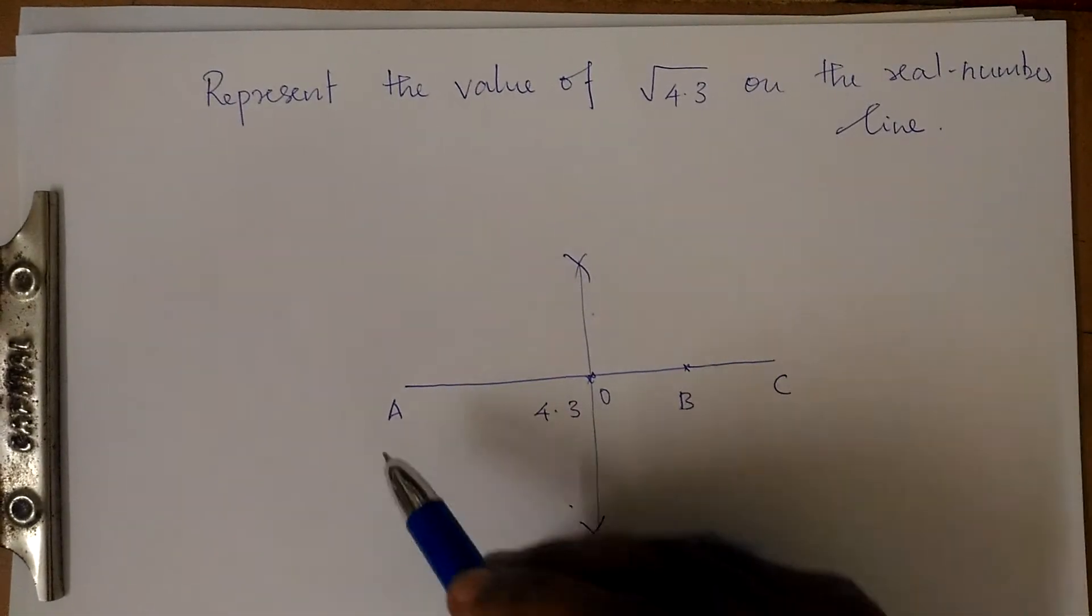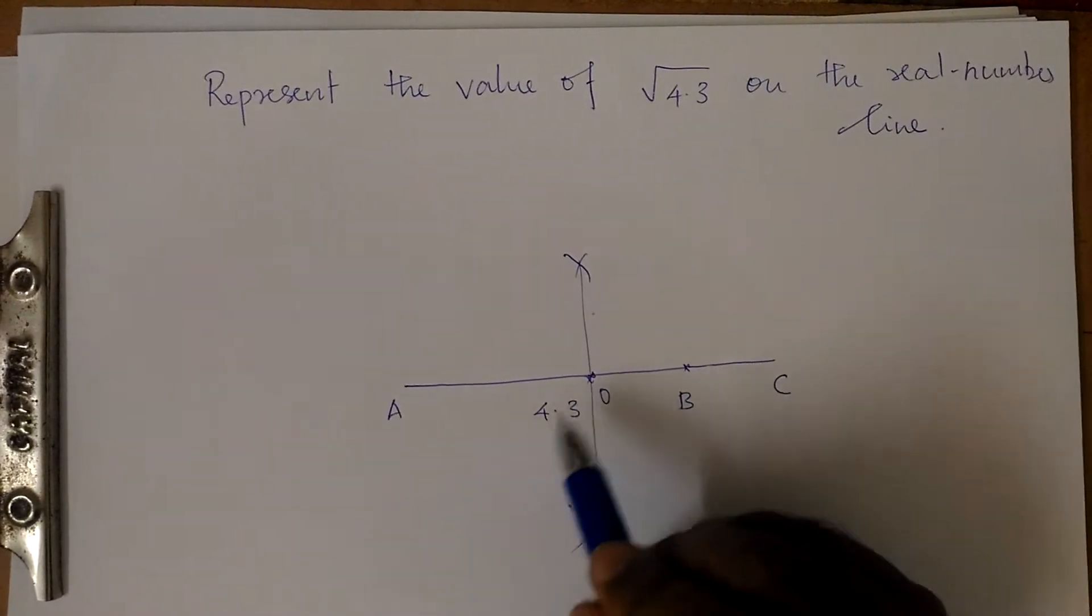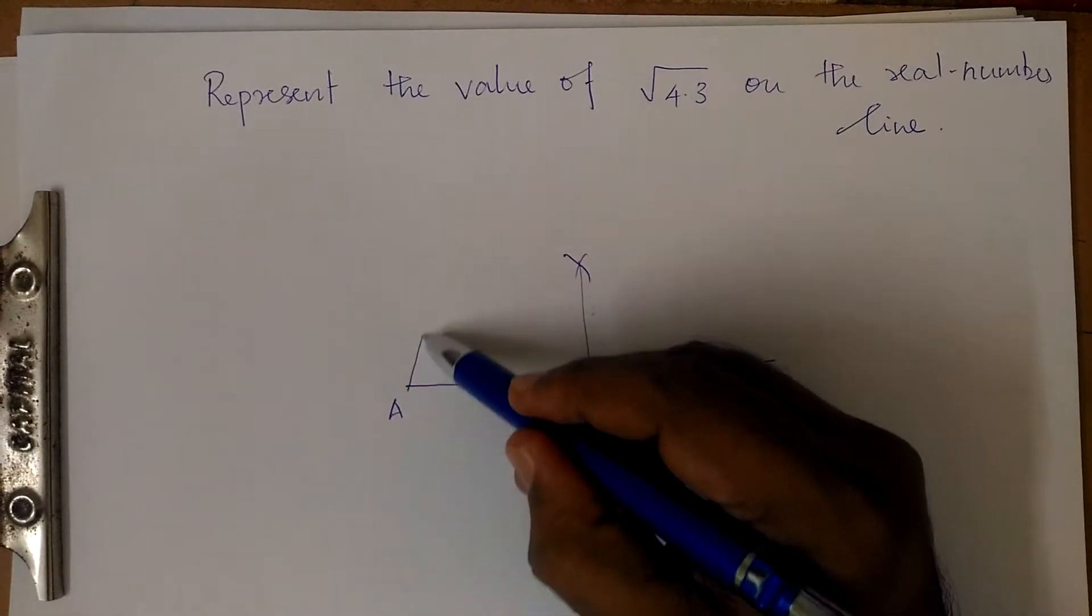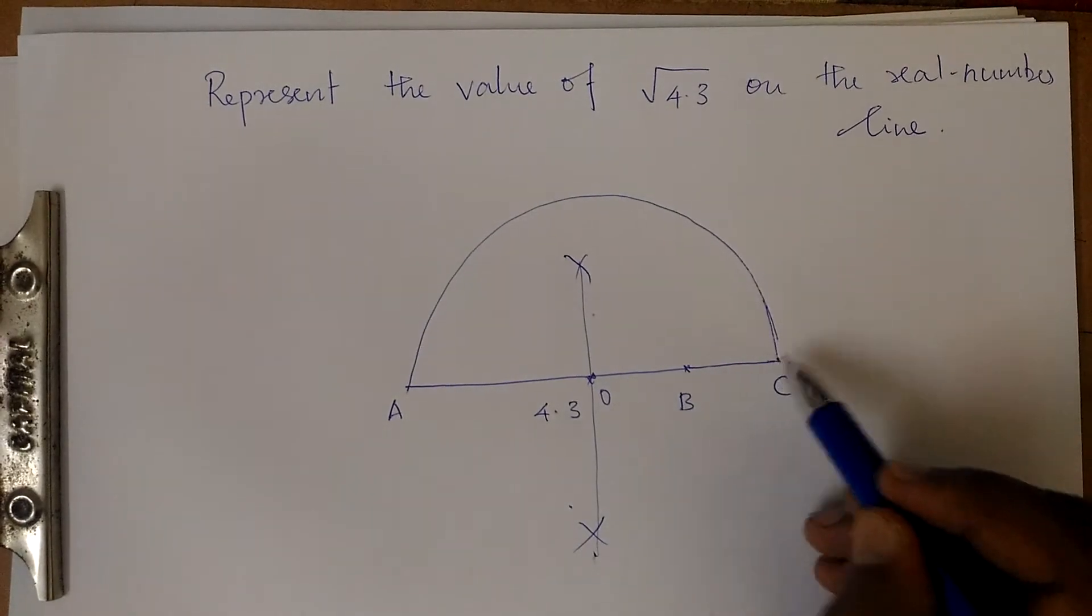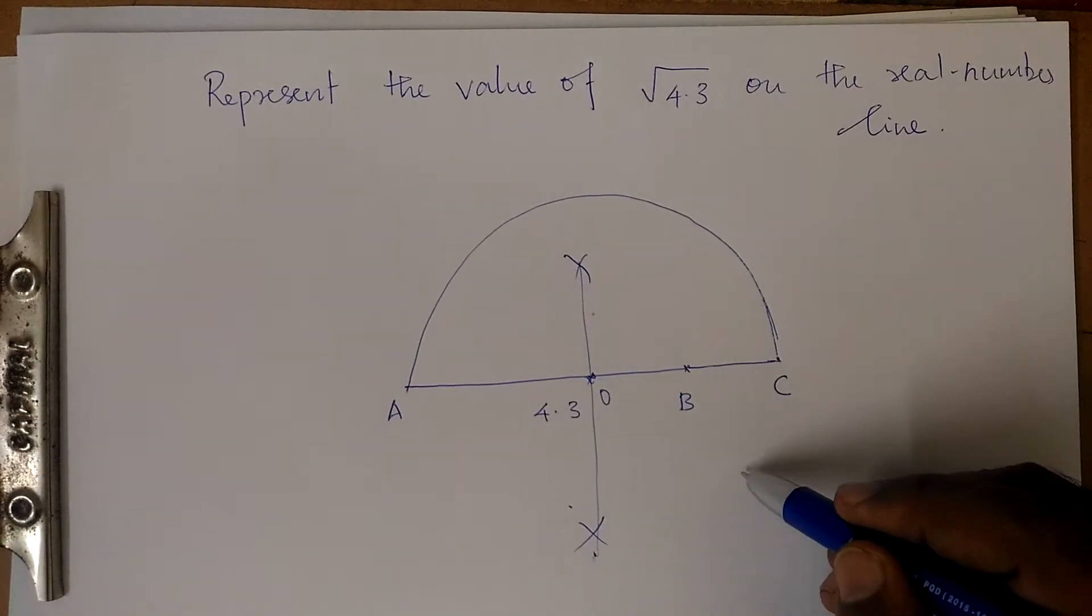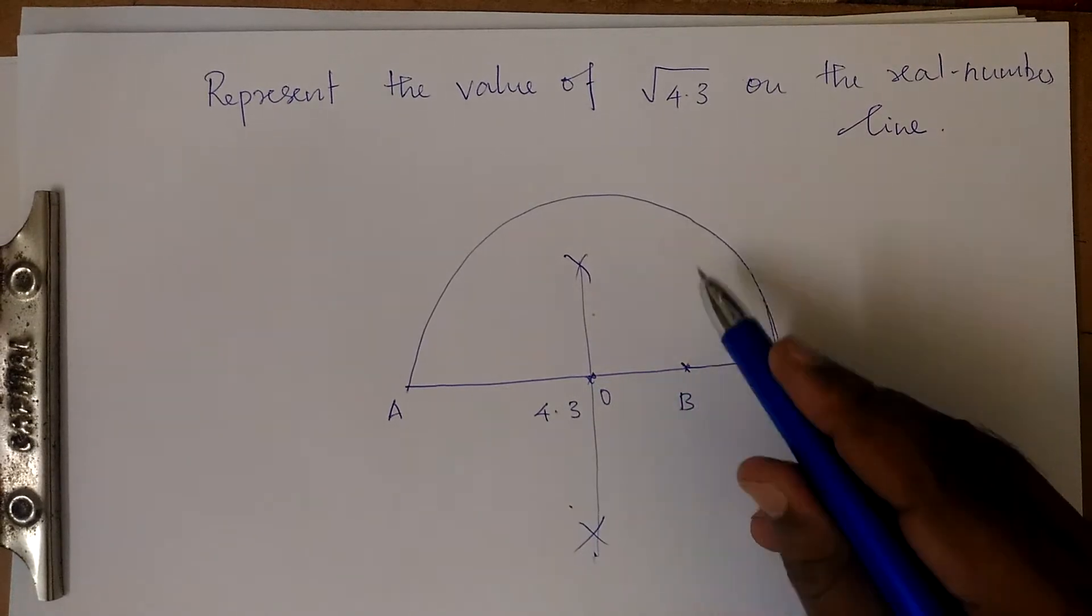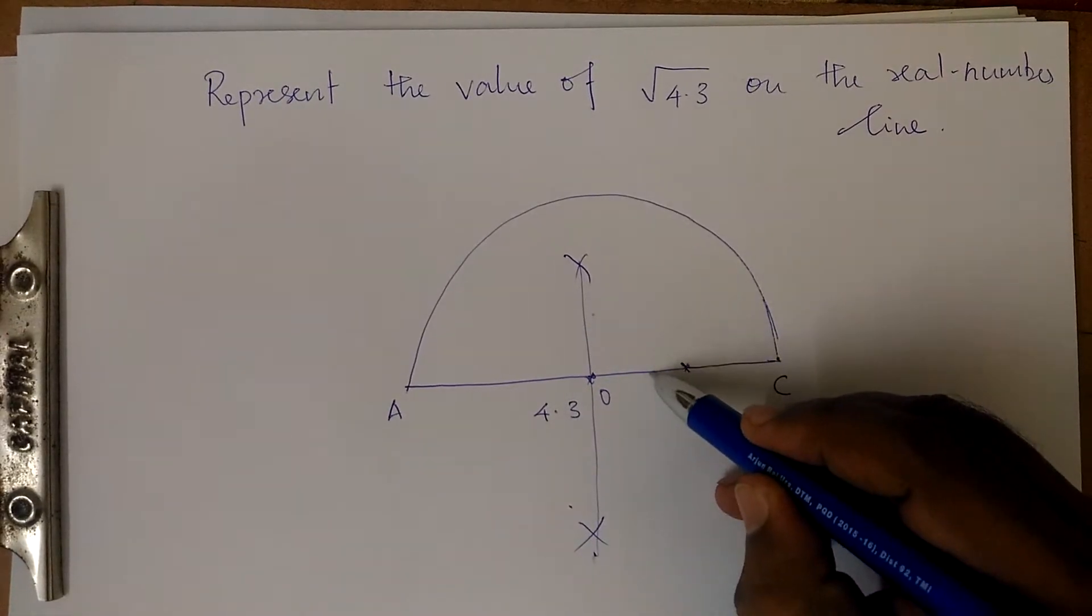With O as center and OA as radius, draw a semicircle. After that, from B you have to draw a perpendicular.